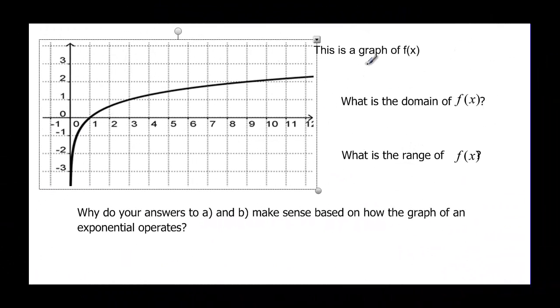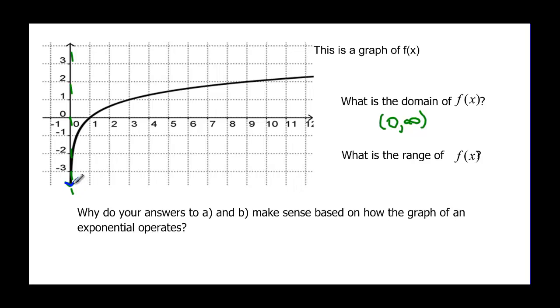Now finally we have this f of x graph again same graph but we want to find the domain and range. The domain, remember we talked about the fact that this was an asymptote so it was getting close to zero but not really crossing it. That y axis so we go from zero almost zero that's why it's a parenthesis to infinity. And the range, this graph is going down forever and then it's going to go up forever. Its range would be all reals.